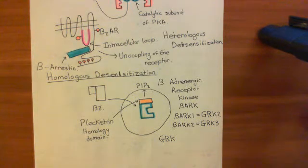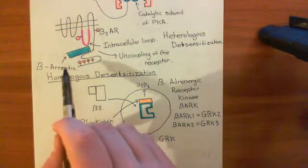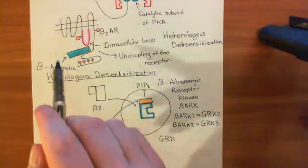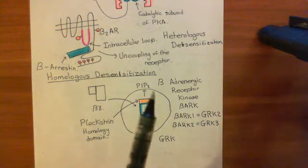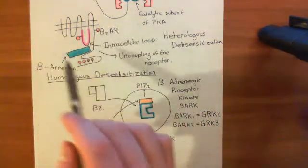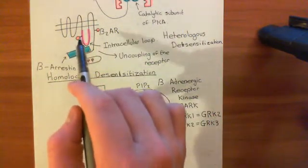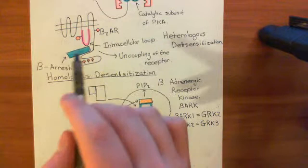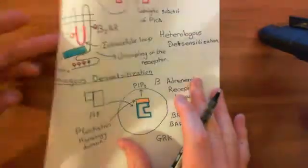In addition, beta-arrestin is going to do rather more than that. It's going to act as the target protein in the clathrin-mediated endocytosis pathway. An adapter protein will come and bind to beta-arrestin, then recruit clathrin, and you're going to basically pinch off an endocytic vesicle containing your beta-2 adrenergic receptor. So the beta-2 adrenergic receptors will be removed from the plasma membrane and put into endocytic vesicles, then going through the endocytic pathway.